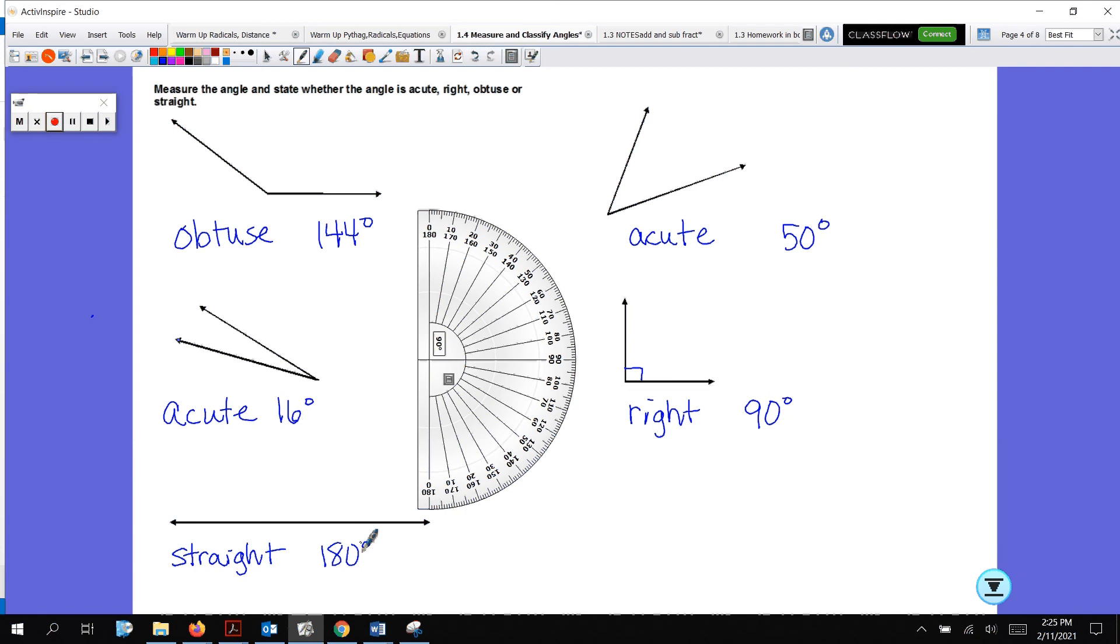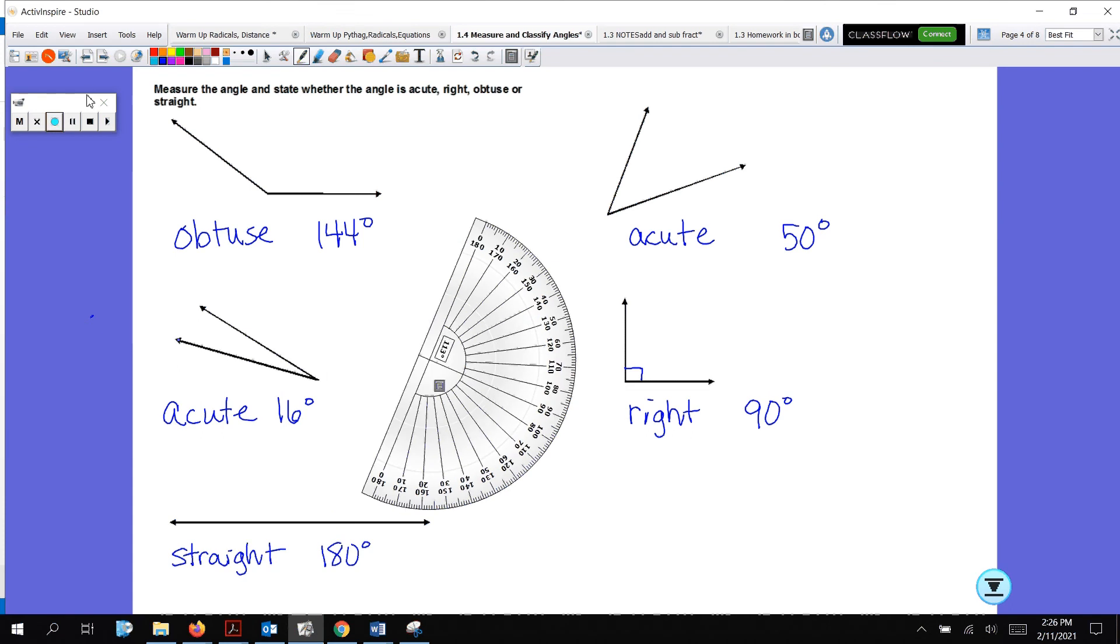I don't think we need a protractor for this angle at the bottom, because this is a straight angle. And it measures exactly 180 degrees. But just a fun activity. Measuring with a protractor is a good time, huh? Hopefully, you were practicing, and you were able to get those measures as well.